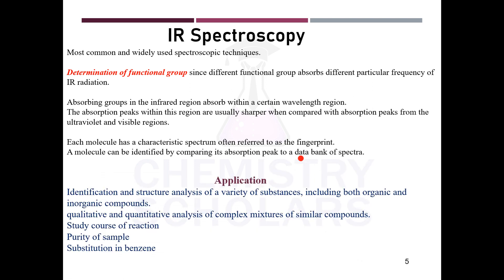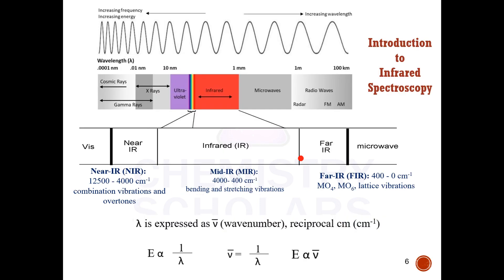The data bank could contain different values of functional groups or the IR spectra of previously analyzed molecules. Applications of IR spectroscopy include structural determination for both organic and inorganic compounds, studying the course of a reaction to see whether it is complete, checking purity of a sample, and most importantly, identifying functional groups.